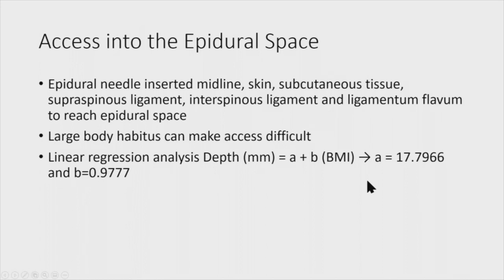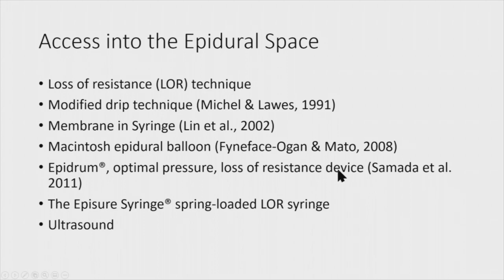For epidural space access, we usually insert midline. You go through the skin, subcutaneous soft tissues, supraspinous ligament, interspinous ligament, and then the ligamentum flavum. Large body habitus can make access difficult. I found literature using linear regression analysis to measure depth to the epidural space — a linear equation incorporating BMI to calculate the depth. We usually use the loss of resistance technique, although several other techniques exist. It's the simplest to use.